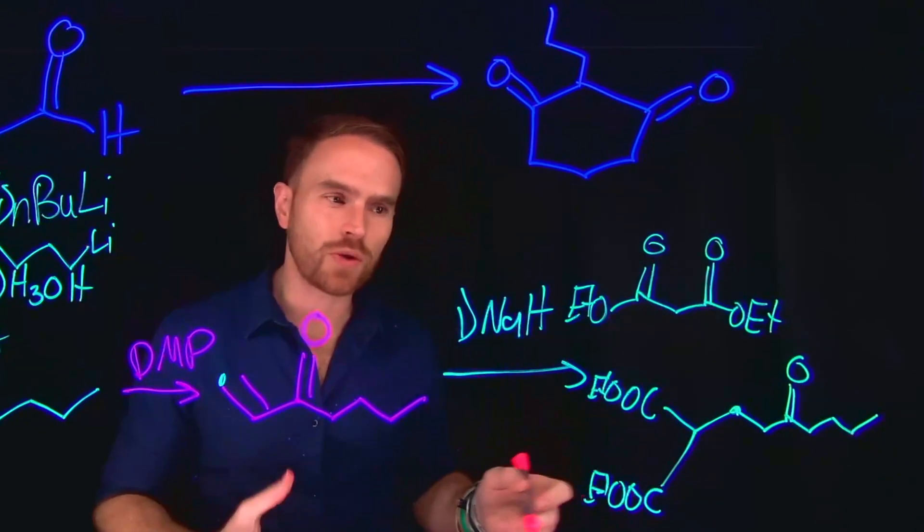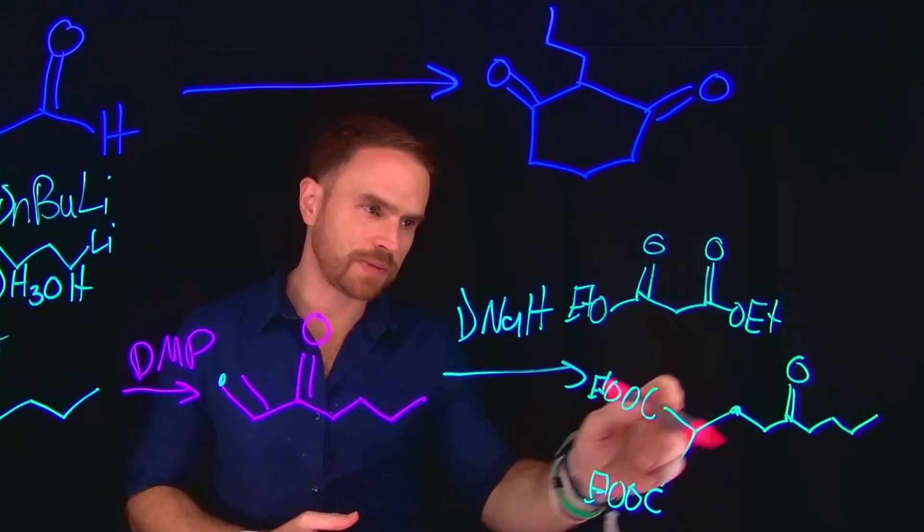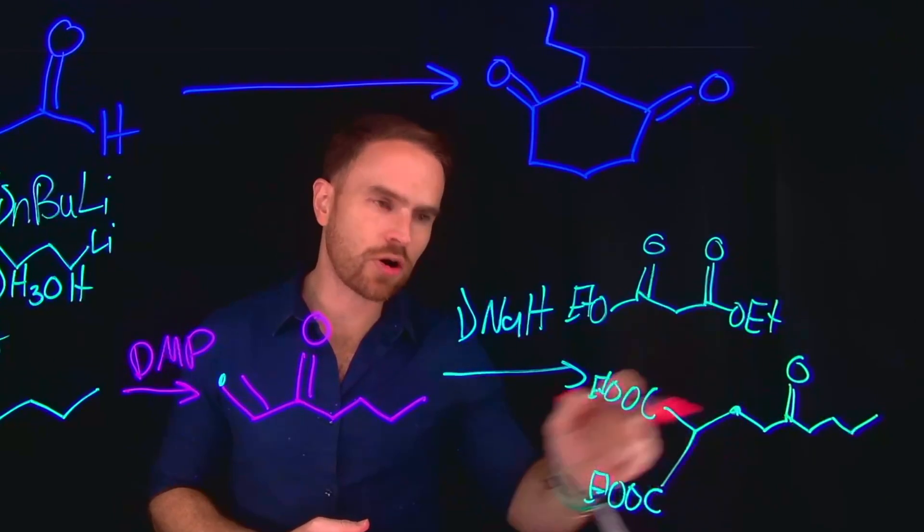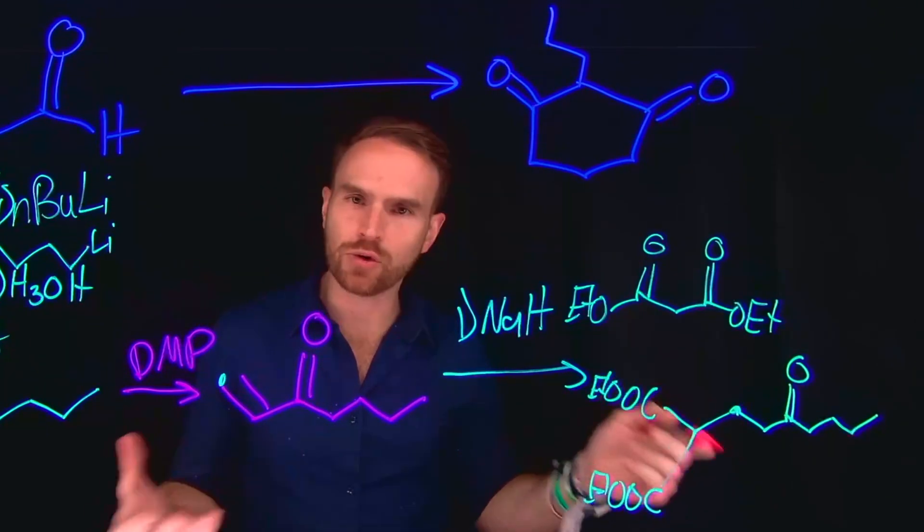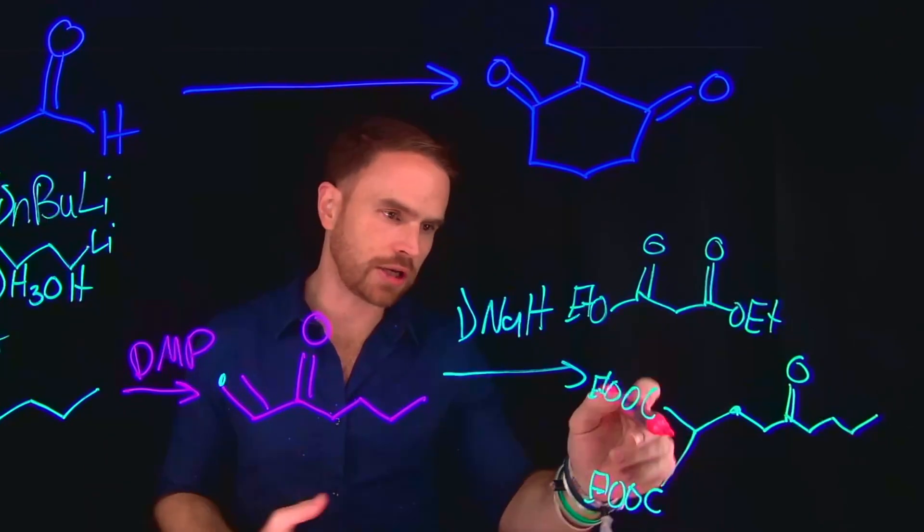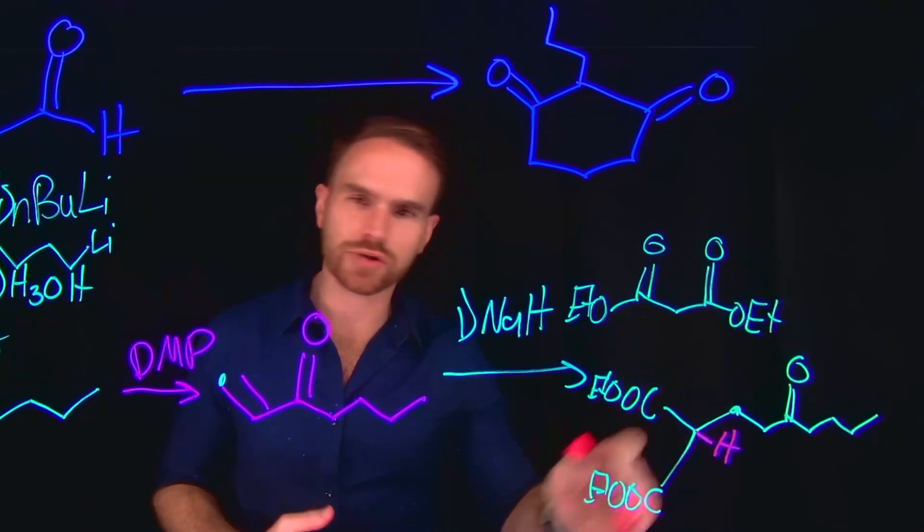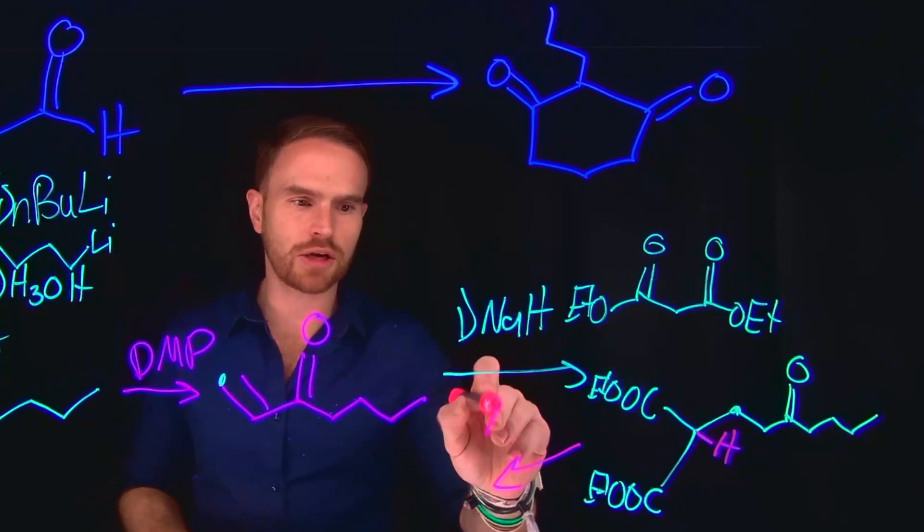And then from here, we can do a Dieckmann cyclization, because we have this diester species and a carbonyl carbon, which can be attacked via nucleophilic acyl substitution, and we can deprotonate this alpha carbon hydrogen using a base like sodium ethoxide.